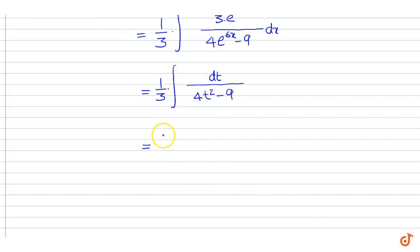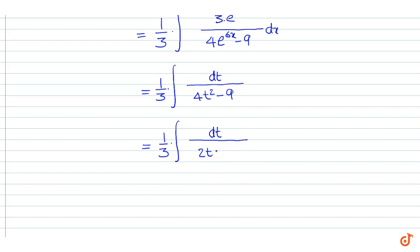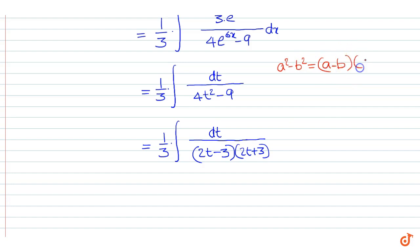This is equal to 1 by 3 into integral of dt upon 2t minus 3 into 2t plus 3. Here we are making use of the formula that a squared minus b squared is equal to a minus b into a plus b, and we are getting this result.